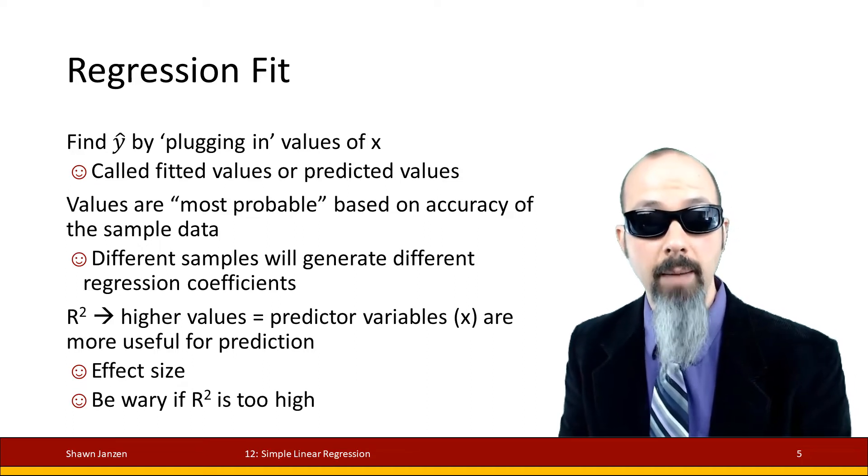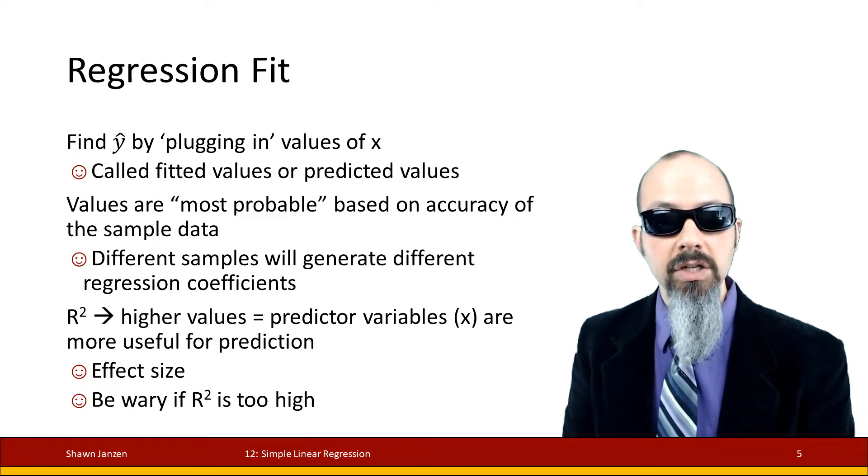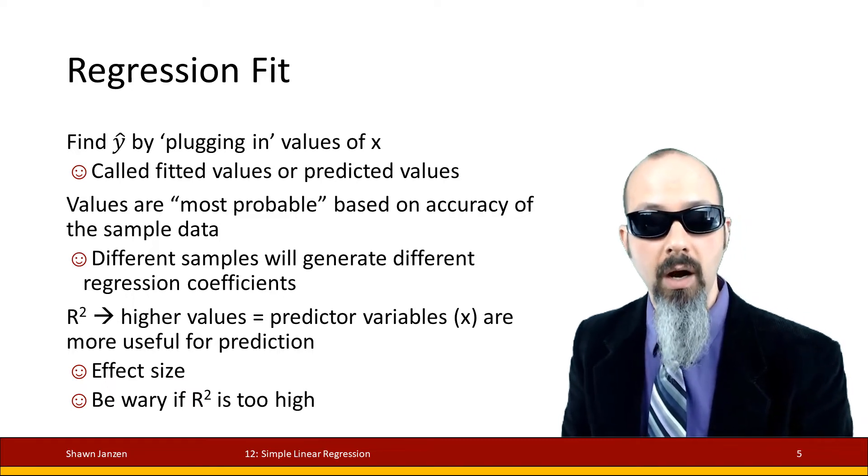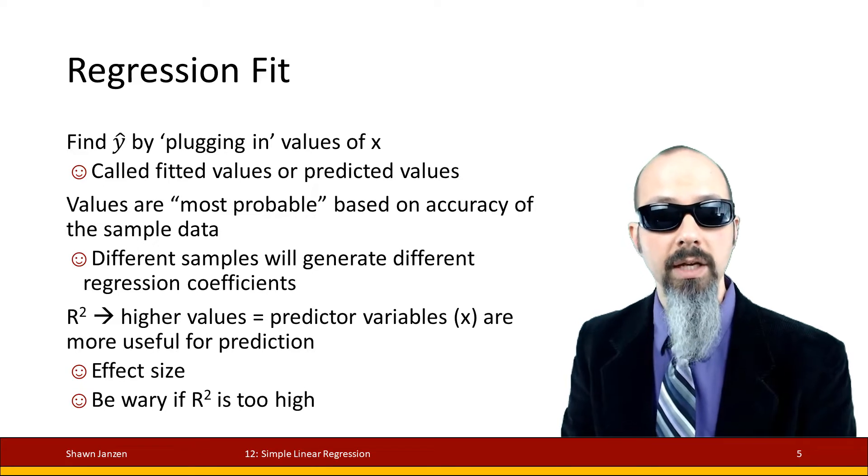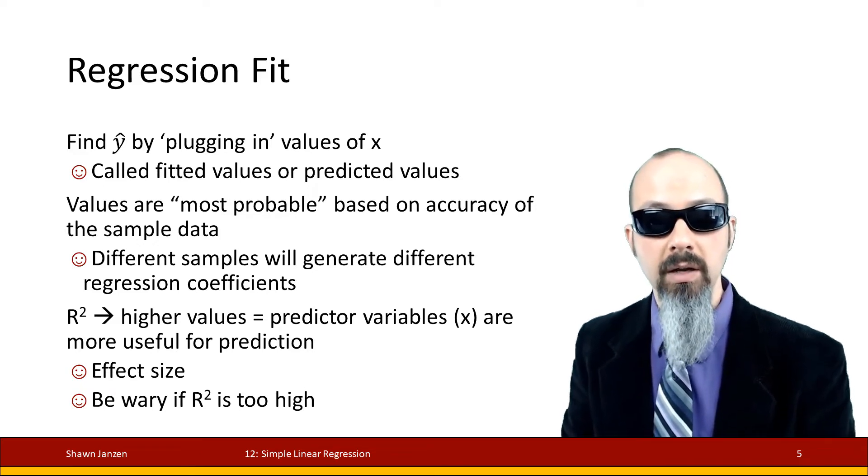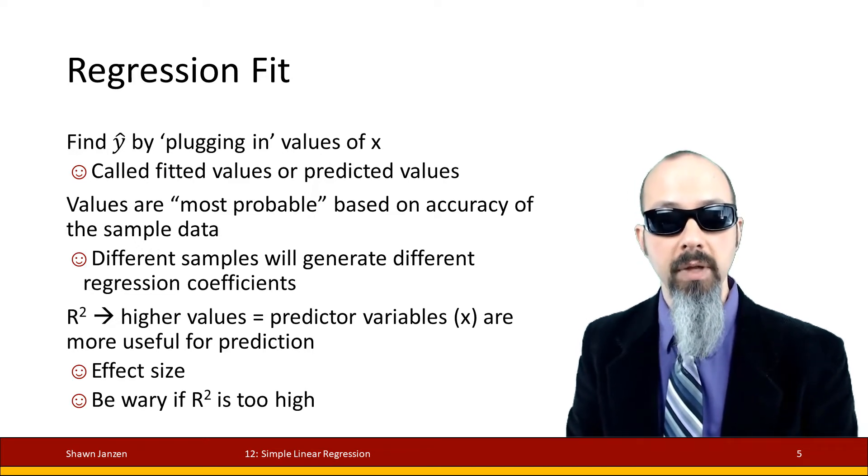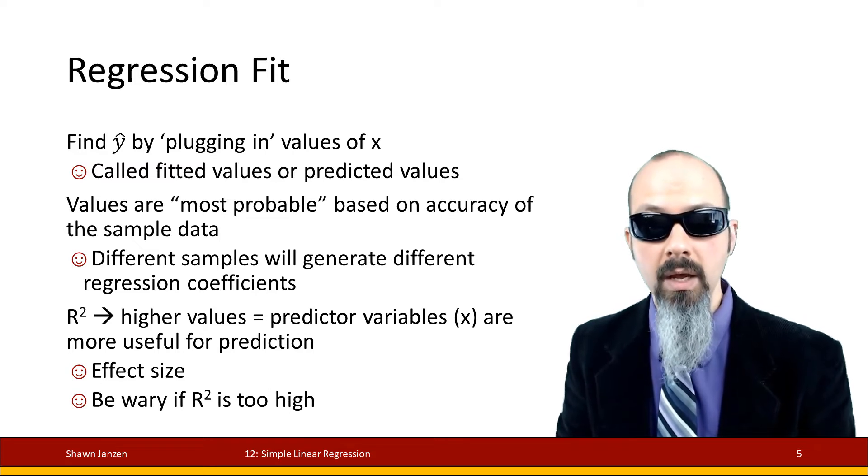When you do these regression models, they're going to generate an R². We talked about R² when discussing correlations and one-way ANOVAs. R² is the amount of variation you can explain based on what you know.